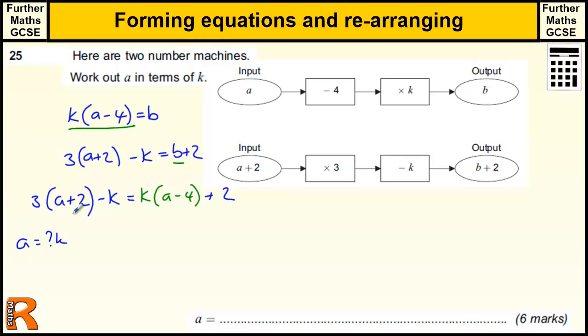So we need to multiply it all out, get all the a's to one side, factorize, and then divide away the bracket. Essentially that's what we'll do. So let's multiply this out. We've got 3a plus 6, because 3 times a is 3a and 3 times 2 is 6, take away k, equals ka - or k times a - minus 4 times k is 4k, plus 2.